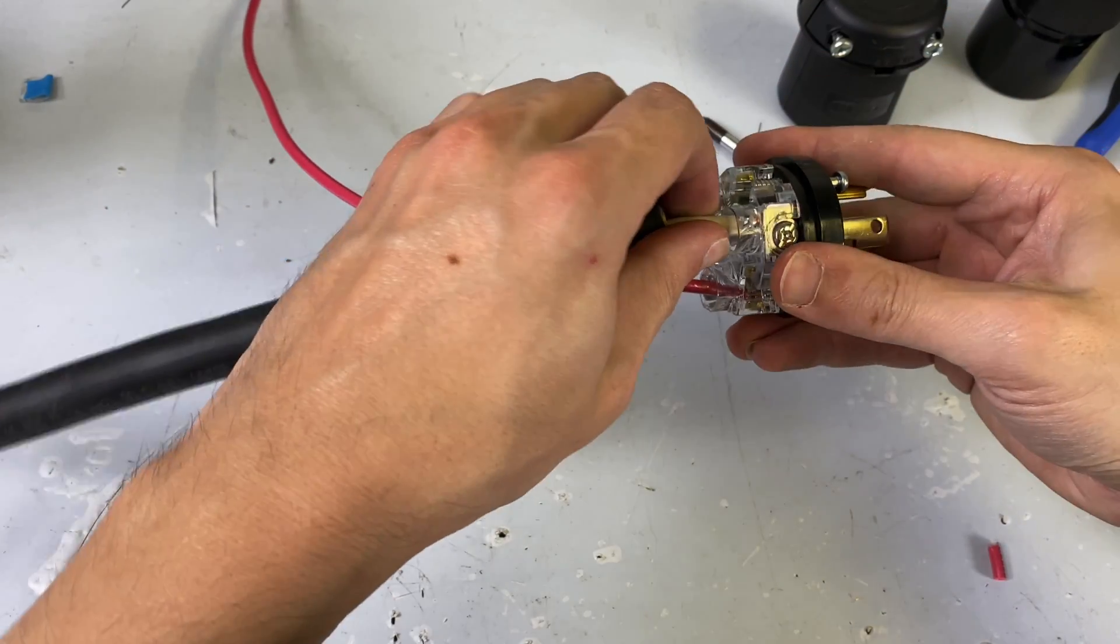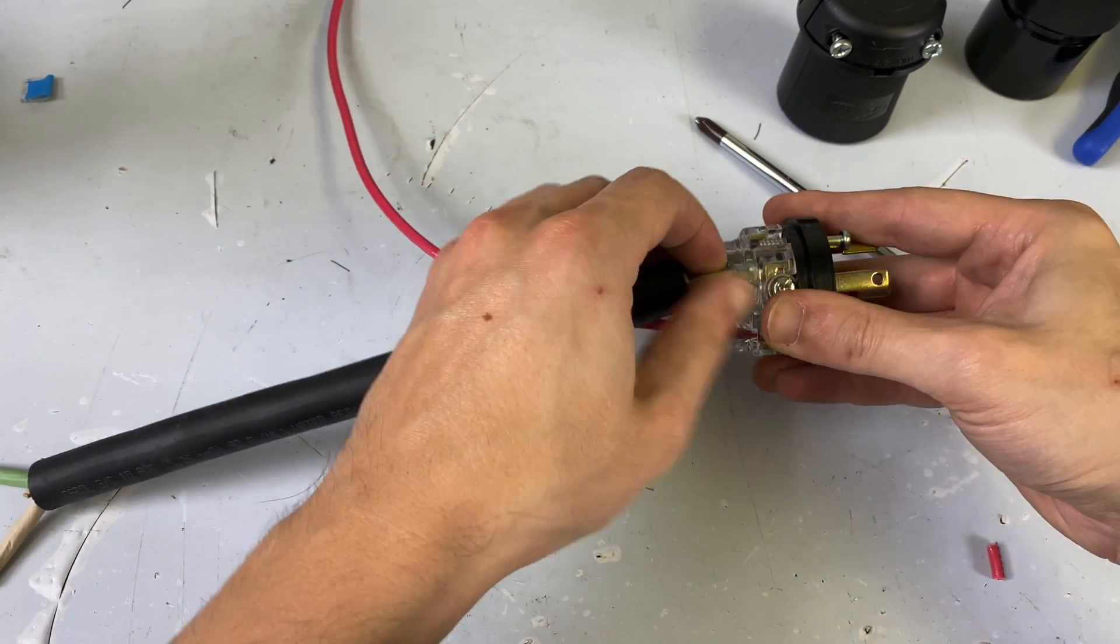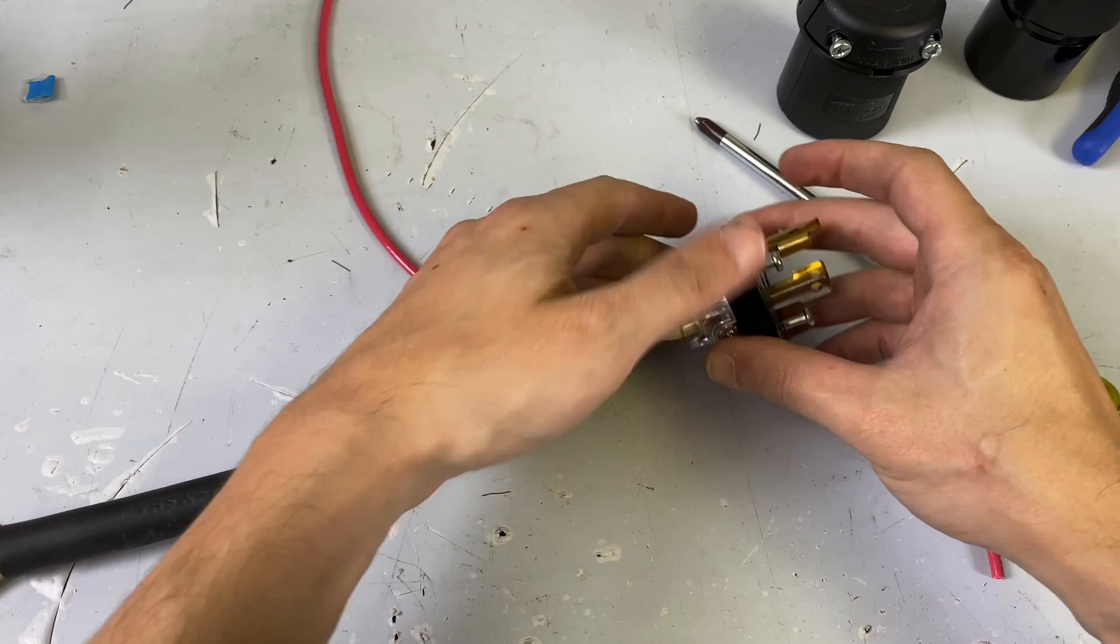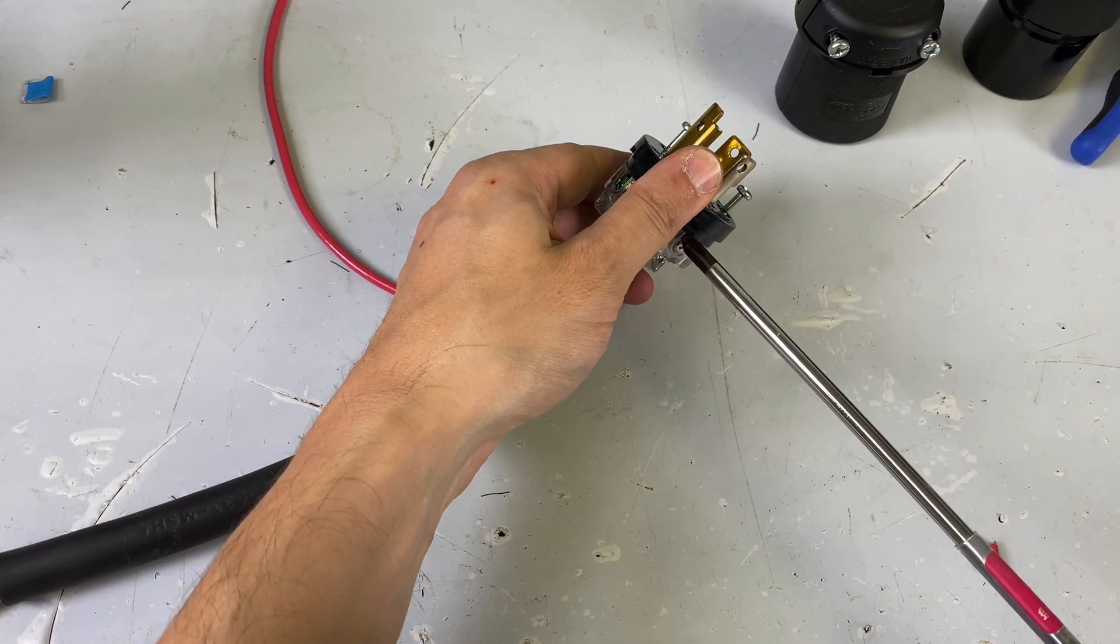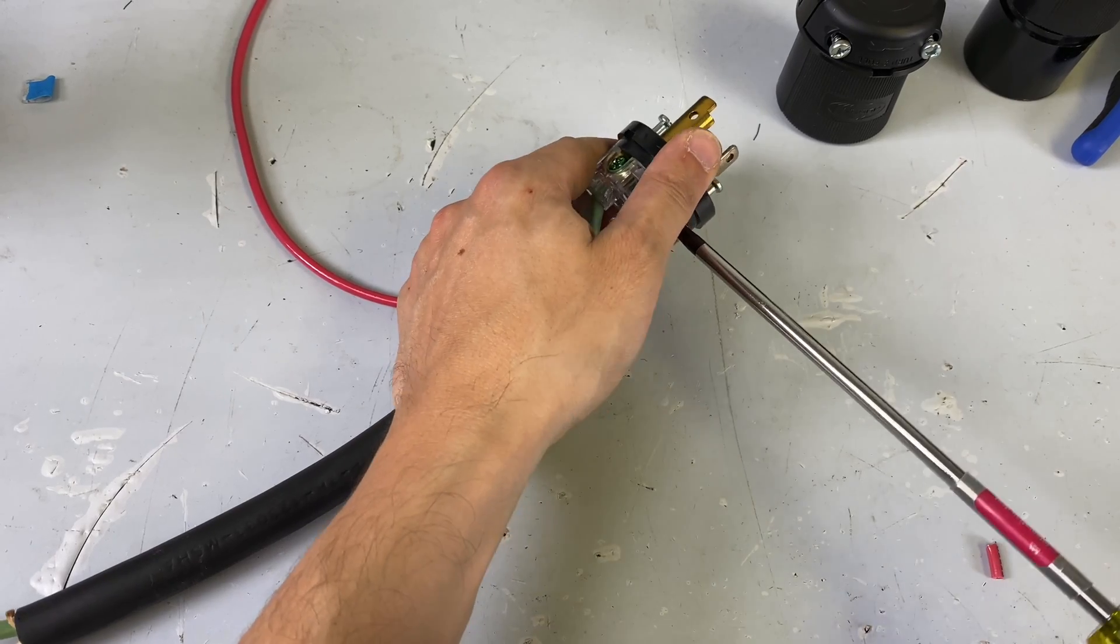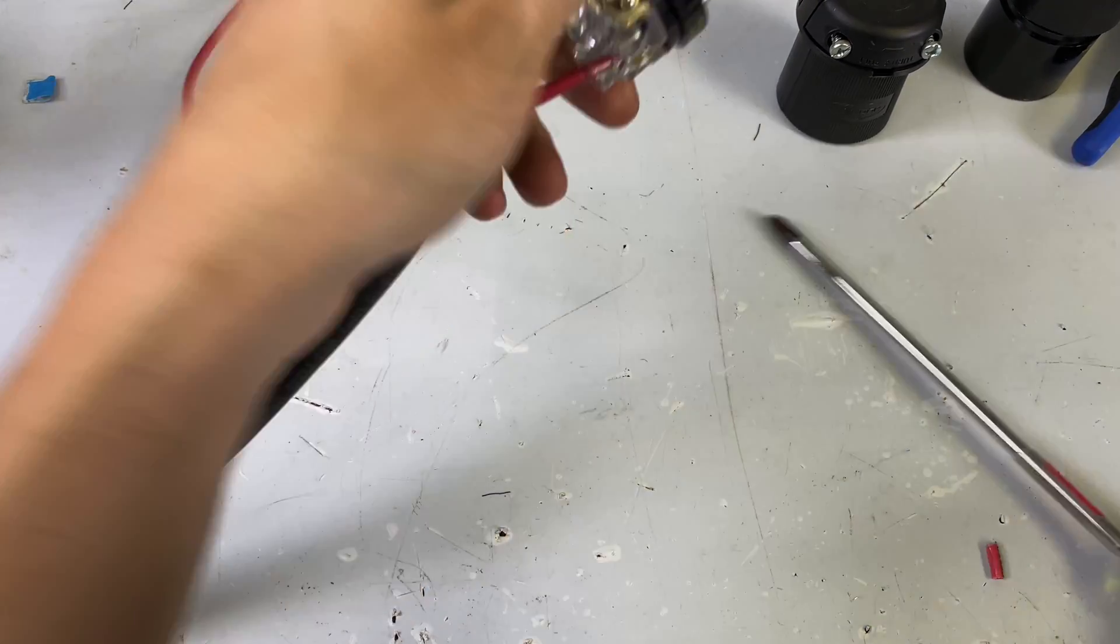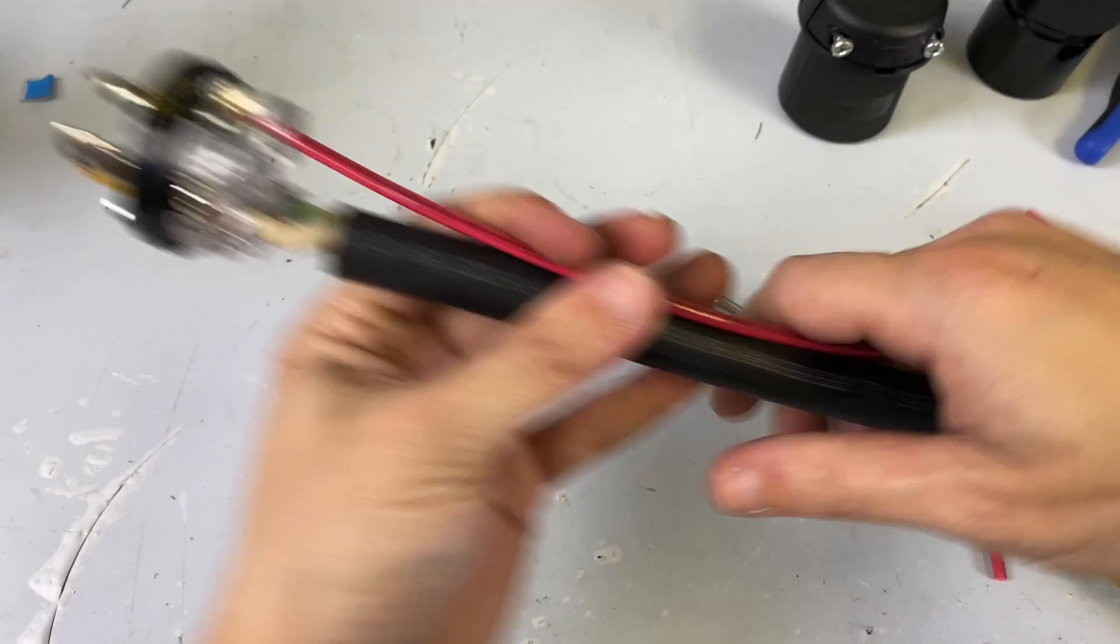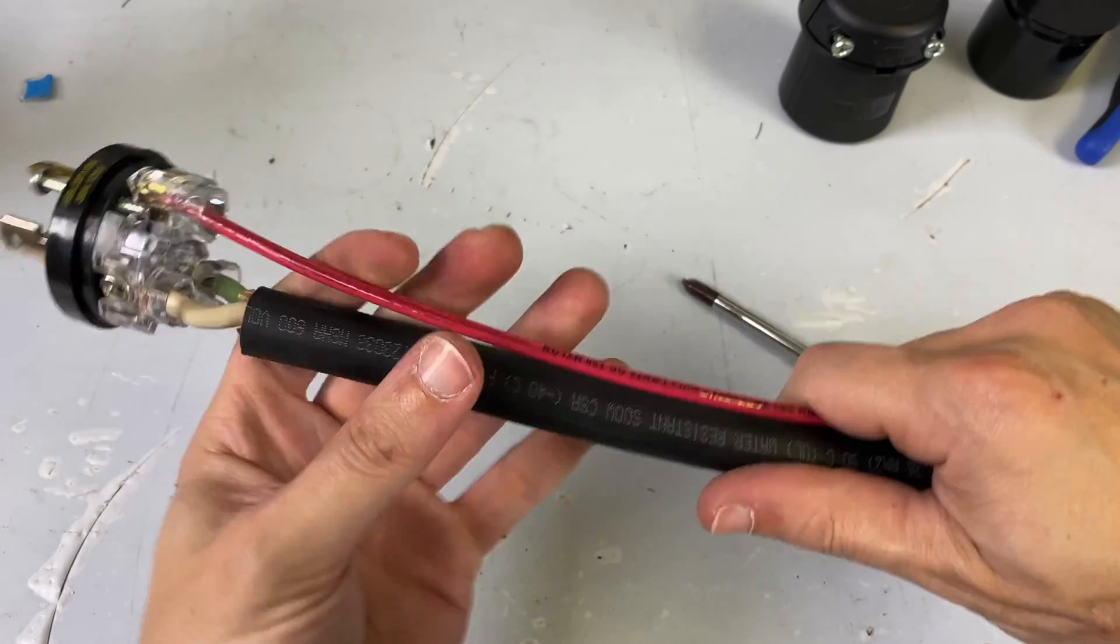Now, the clamp amp meter will measure amperage either via the hot or the neutral. So in audio terminology, either the send or the return, if you think about it like that. Okay, so I've got this guy.